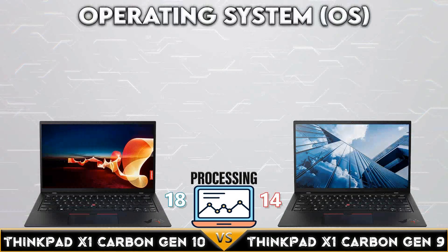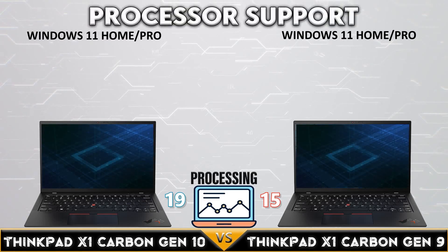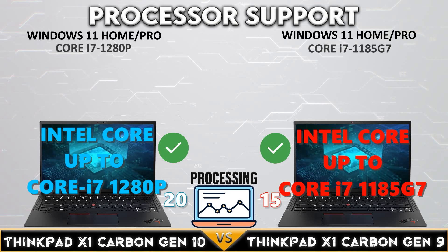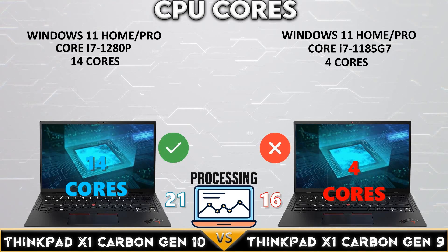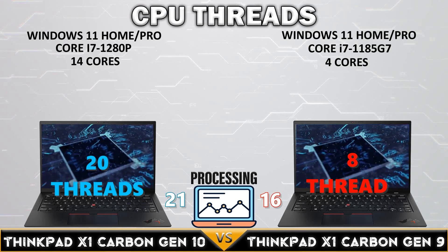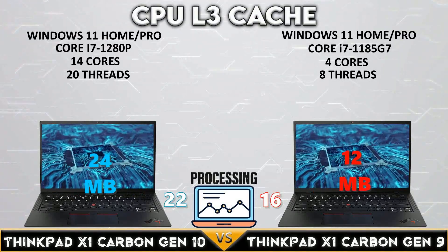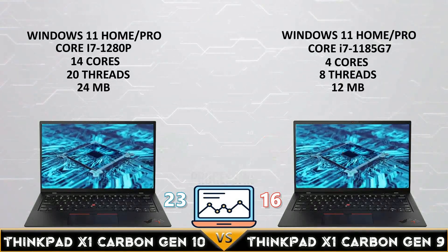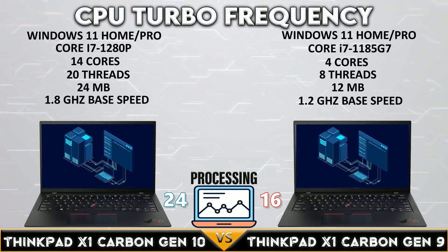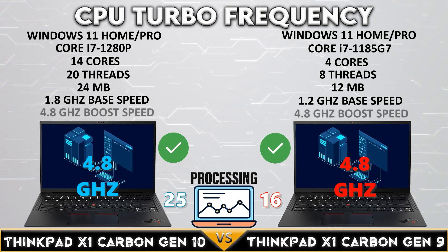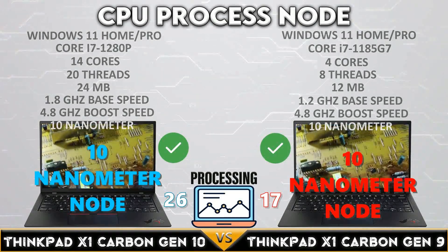In the processing comparison, both laptops support Windows 11 and support 11th and 12th generation mobile CPUs. The ThinkPad 2022 has a higher core count with a Core i7-1280P mobile CPU with 20 threads and 24MB of L3 cache, with a base clock of 1.8GHz. Both have the same CPU boost clock at 4.8GHz, and both have a 10nm CPU process node.